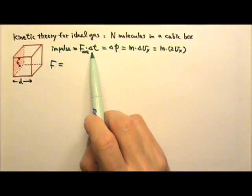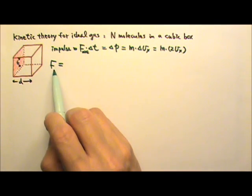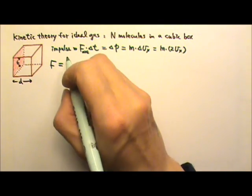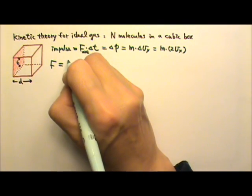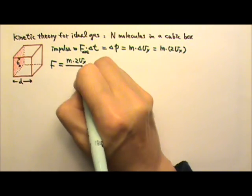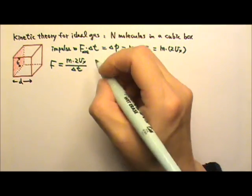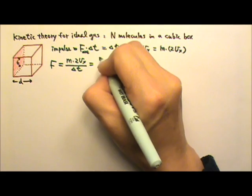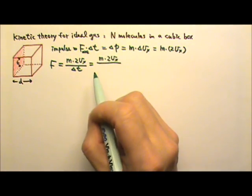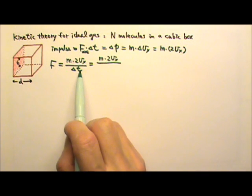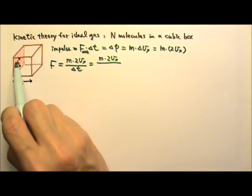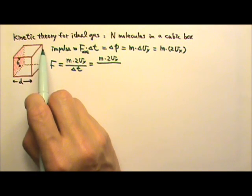If I divide by delta t on both sides, I'll be able to get the force. And this will be m times 2vx divided by delta t. The delta t would be the time between two collisions. This particle would collide with this wall, go to the other side, and bounce back.